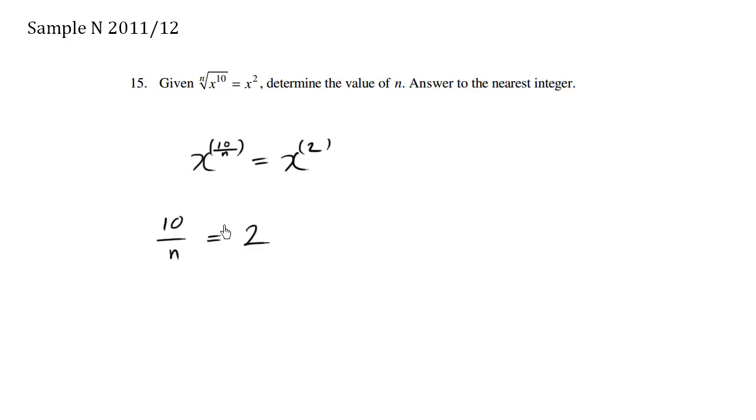And once we're at this point, we can just use whatever simple algebraic techniques to solve for n. In this case, we're going to use cross multiplication. 2 is the same thing as 2 over 1, so we're going to cross multiply.